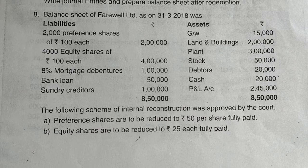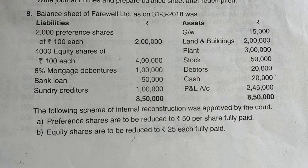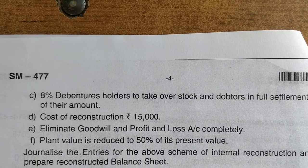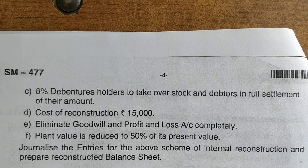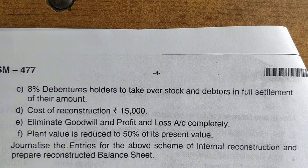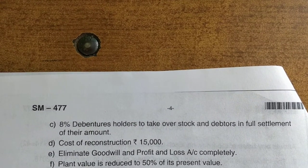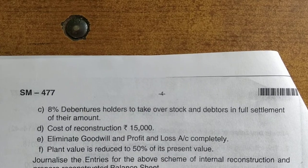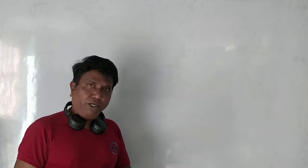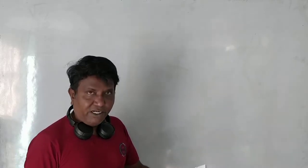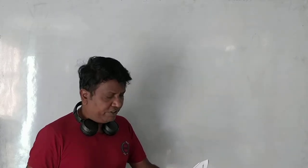This is the Internal Reconstruction 2018 question paper. In the previous video we covered the basic concepts of internal reconstruction. Now let us start working on problems. In 2018 they asked a 14-mark question — Question Number 8. The Balance Sheet of Farewell Limited as on 31st March 2018 was given, with 2,000 preference shares and 4,000 equity shares.